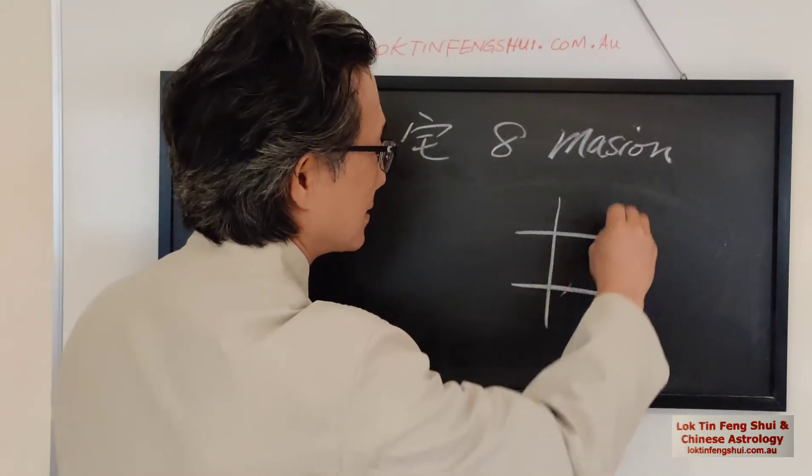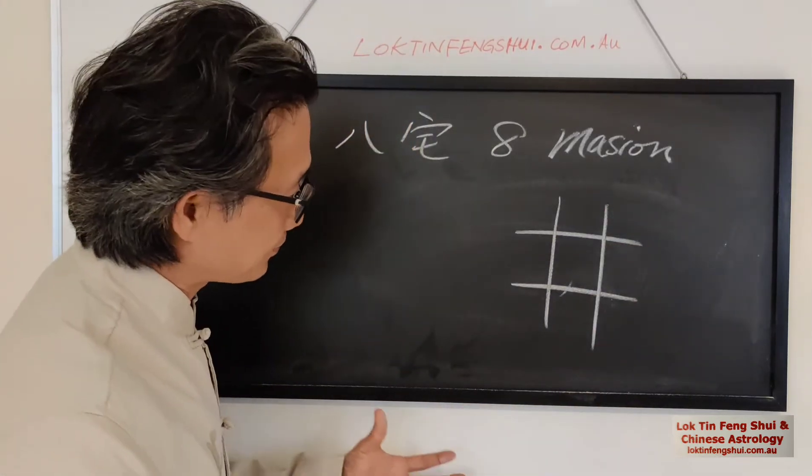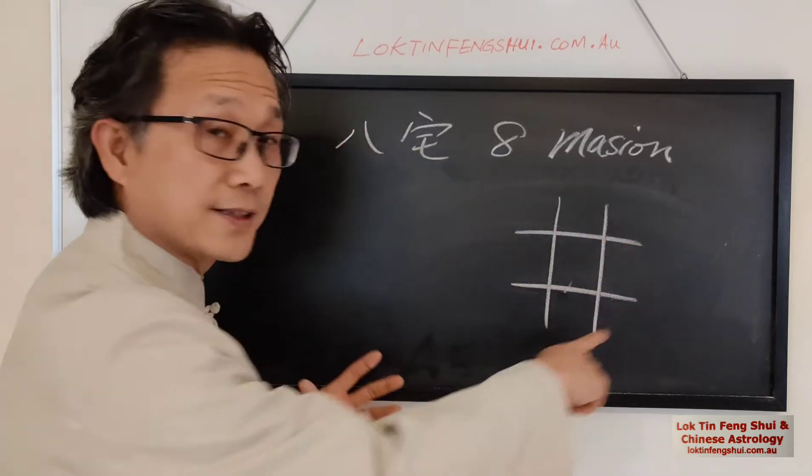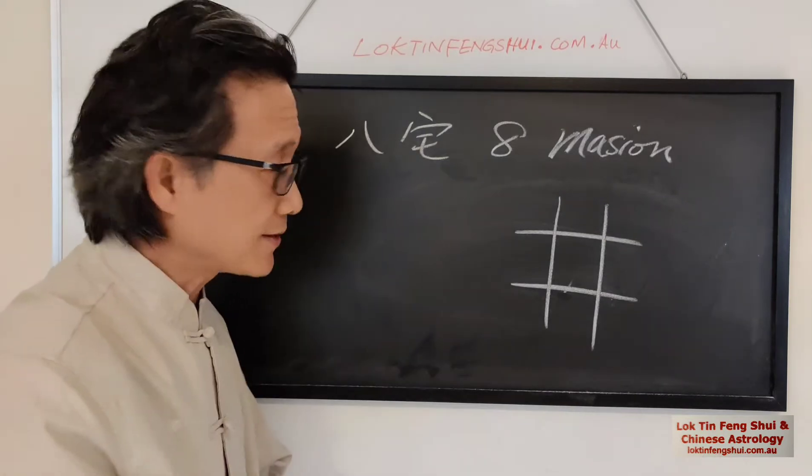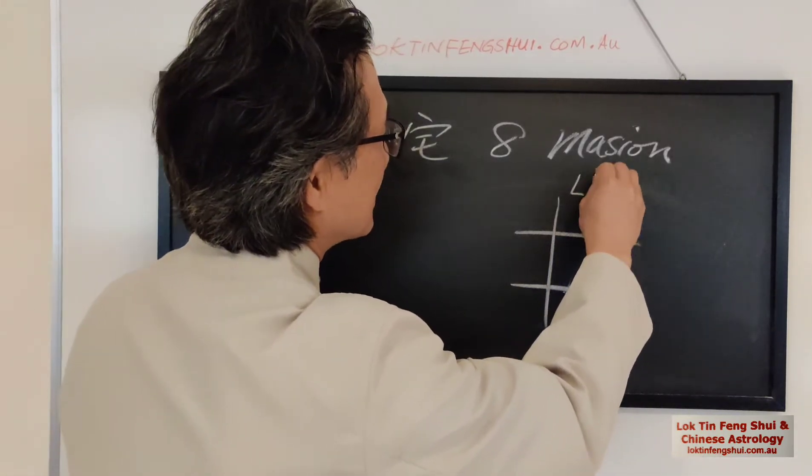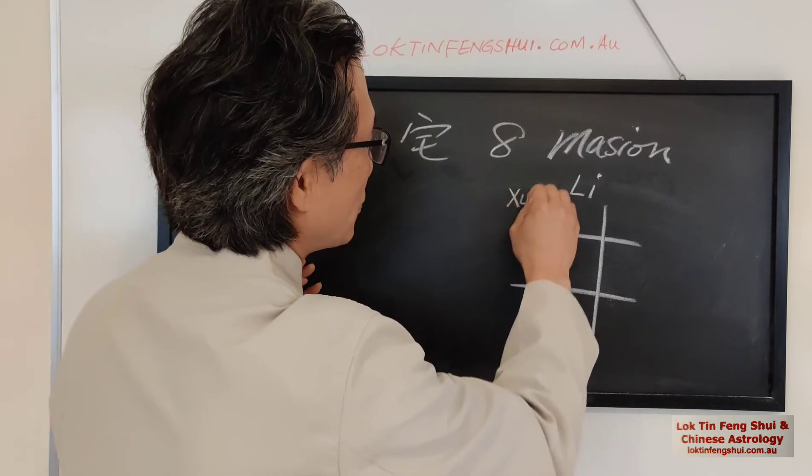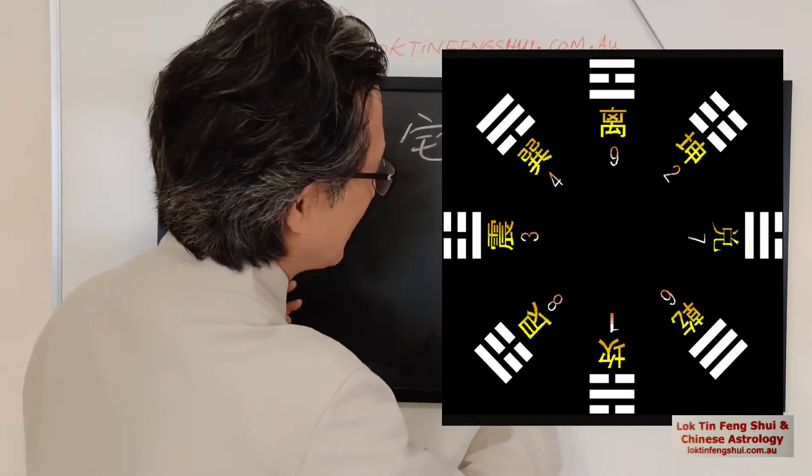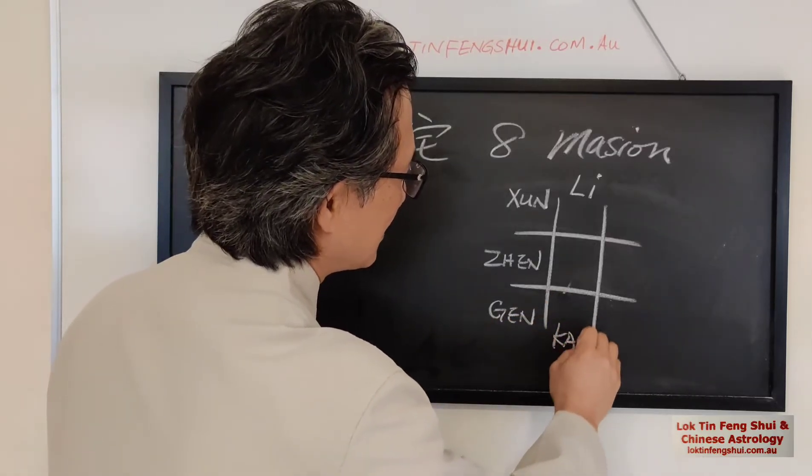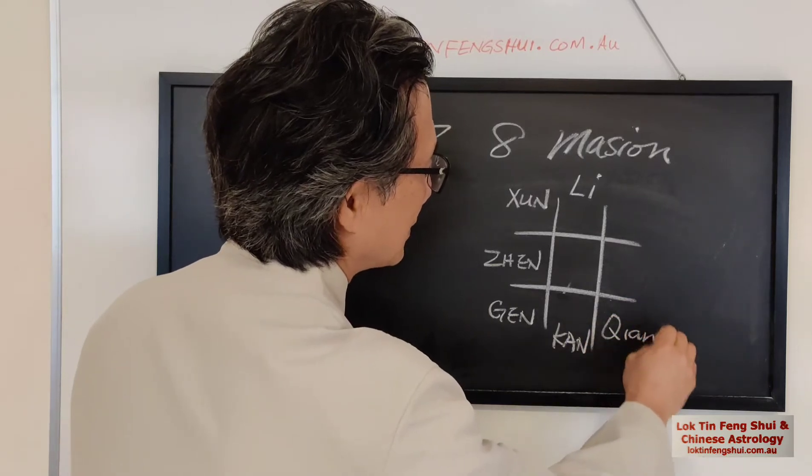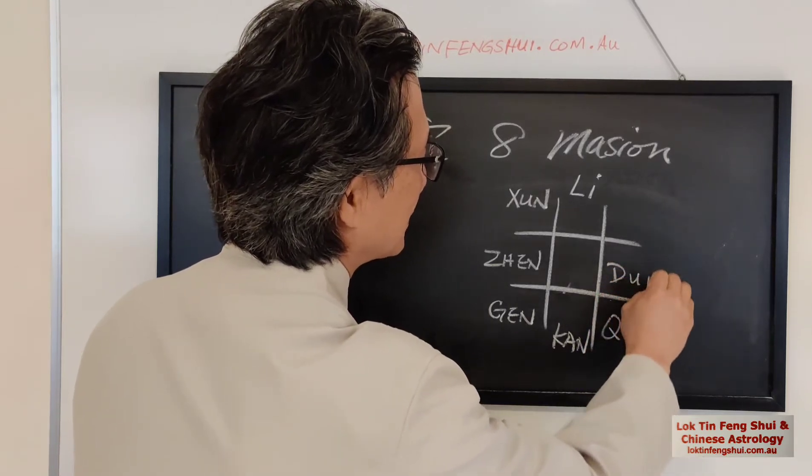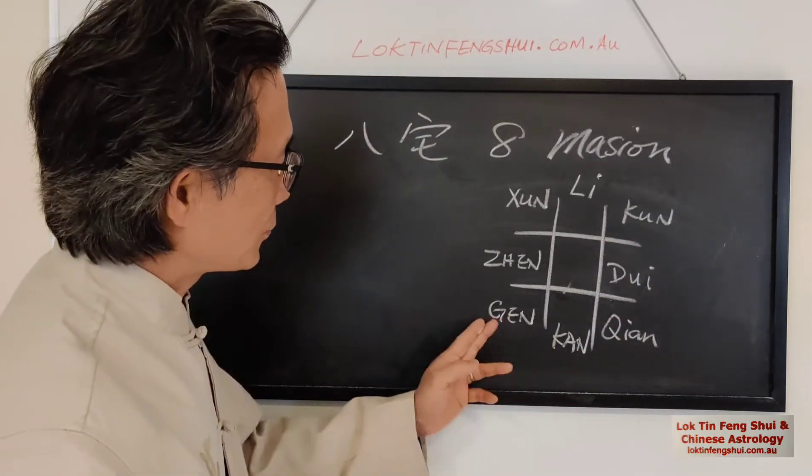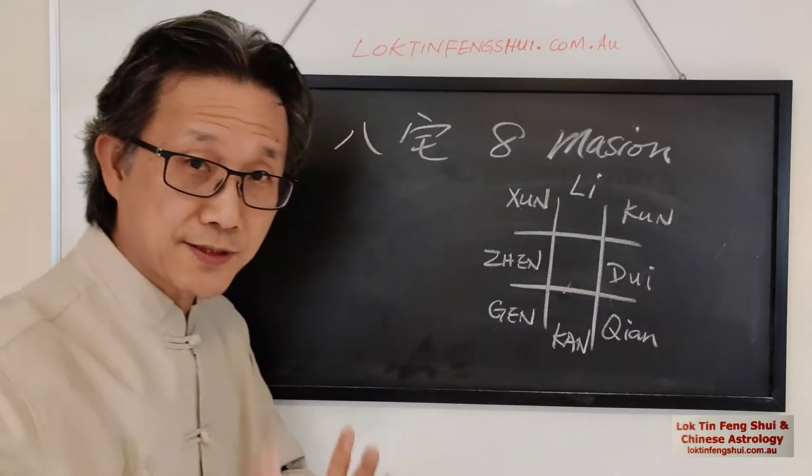So it would be easier for me and for you to see. So generally, we will look at like a grid like this. So we have the different Gua in different areas, like in the later heaven. This is Li Gua, and this is the Xun Gua, this is the Zhen Gua, right? And this is the Gen Gua, this is the Kan Gua, Qian, Dui, and Kun. So one, two, three, four, five, six, seven, eight. So it's eight there.